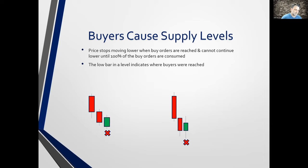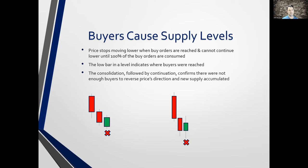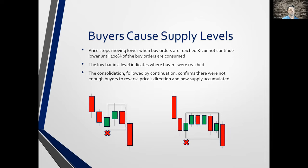The low bar in the level indicates where the buyers were reached. We know that because we stopped — there's no way to stop unless we reach a buyer. It doesn't have to be a ton of buyers. There's no way to go through a price value until we consume the orders. The consolidation followed by continuation confirms there were not enough buyers to reverse price direction, and new supply accumulated.